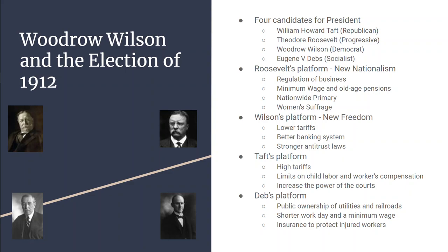You had William Howard Taft, who was Republican. You had Theodore Teddy Roosevelt, who was formerly Republican, but by 1912 he has formed a new political party known as the Progressive Party or the Bull Moose Party. You had Woodrow Wilson, who was a Democrat, and then you had Eugene V. Debs, who was a socialist.